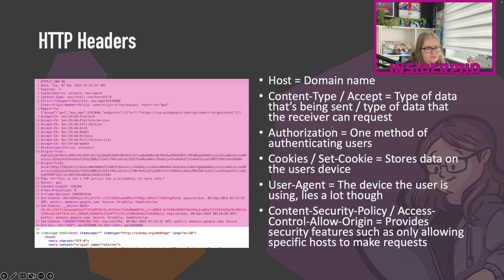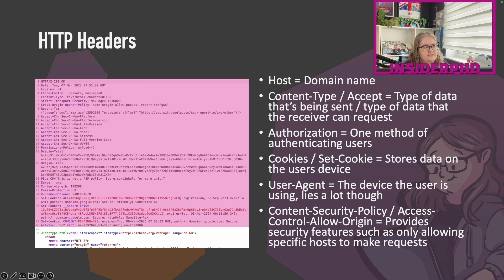Here are some of the most common HTTP headers. The Host is the domain name. Content-Type and Accept define the type of data being sent and received. Authorization is one method of authenticating users and showing permission. Cookies and Set-Cookie allow data to be stored on a user's device. The User-Agent shows the device the user is using — though it can't really be trusted, it's just plain text. Important security headers include the Content-Security-Policy and Access-Control-Allow-Origin, which implement security controls at the browser level such as only allowing specific hosts to make requests.